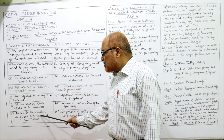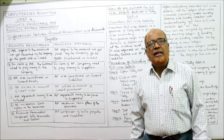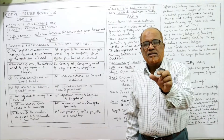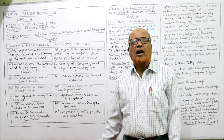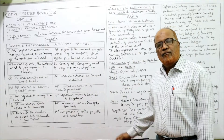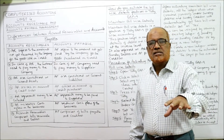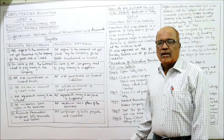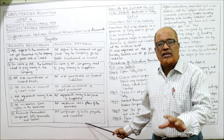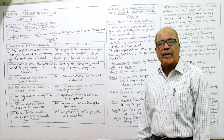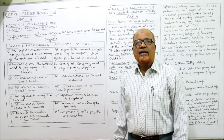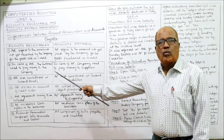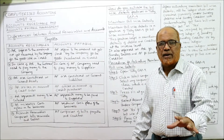Accounts receivable comprises both bills receivable and debtors — their total is called accounts receivable. Whereas accounts payable comprises bills payable and creditors combined together. These are the key differences between accounts receivable and accounts payable, which are frequently asked in examinations.